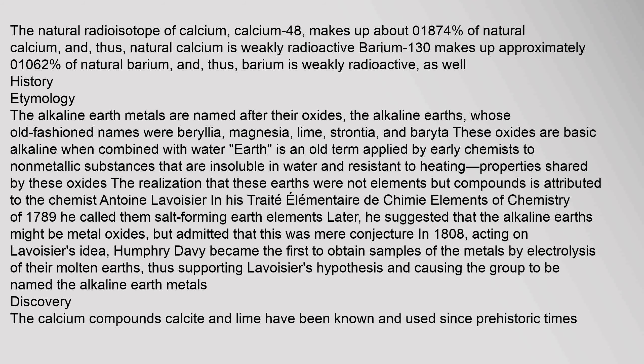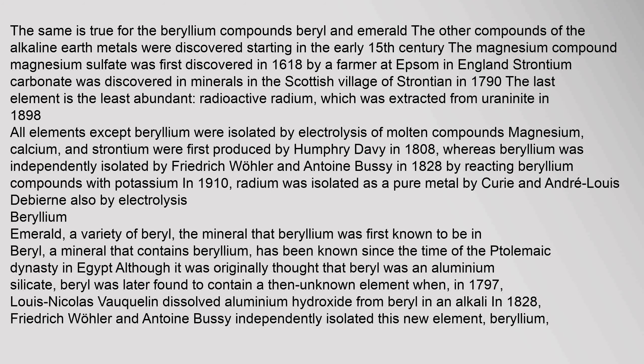The calcium compounds calcite and lime have been known and used since prehistoric times, as have the beryllium compounds beryl and emerald. Other compounds of the alkaline earth metals were discovered starting in the early 15th century. Magnesium sulfate was first discovered in 1618 by a farmer at Epsom in England. Strontium carbonate was discovered in minerals in the Scottish village of Strontian in 1790. Radium, the least abundant and radioactive, was extracted from uraninite in 1898. All elements except beryllium were isolated by electrolysis of molten compounds.